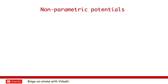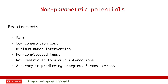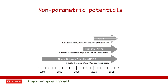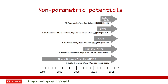Requirements to be met by non-parametric potentials are very similar to conventional parametric potentials. Evaluations using these potentials should be fast at low computation cost, human effort should be minimum in their development, and they should be able to work on non-complicated input. These potentials should not be restricted to specific types of atomic interactions, and most importantly, they should be accurate in their energy, force, and stress predictions. The first surge in interest in these potentials was seen in the 90s, and since then several ML-based methods have been employed. Early potentials simply relied on artificial neural networks for energy predictions and were applicable to systems containing up to six atoms.